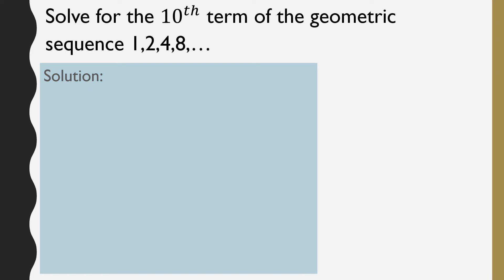Now let's solve for the nth term using its formula. For the first item, we're going to solve for the 10th term of the geometric sequence 1, 2, 4, 8, and so on. We start by solving the common ratio R. Since R equals the second term divided by the first term, R is equal to 2 divided by 1, which is just 2.